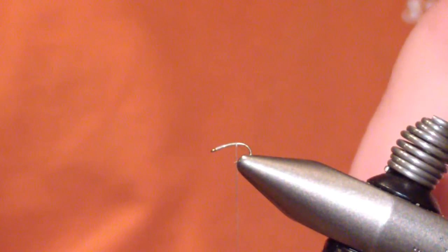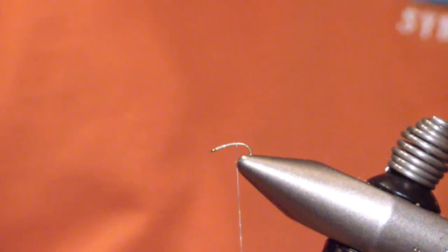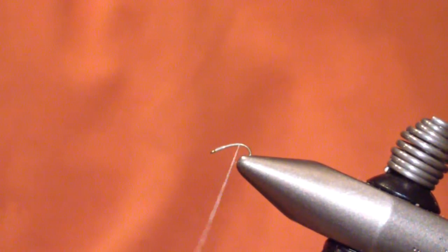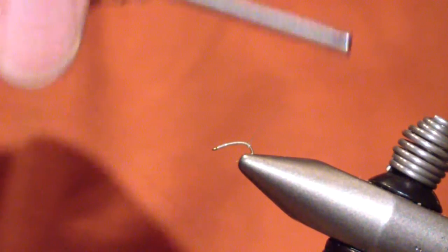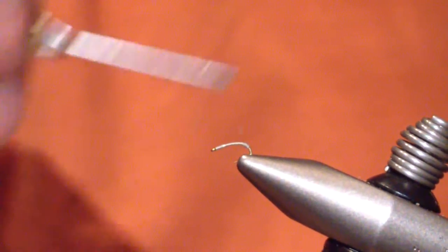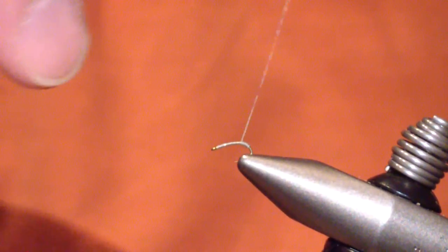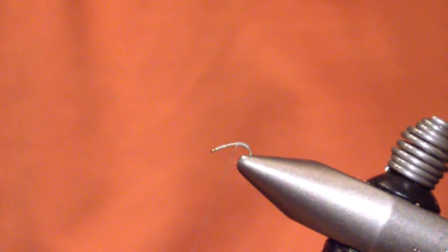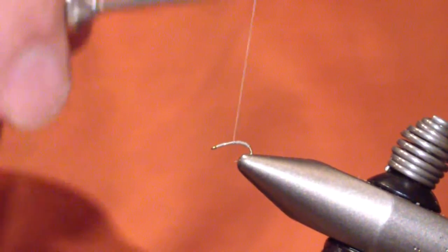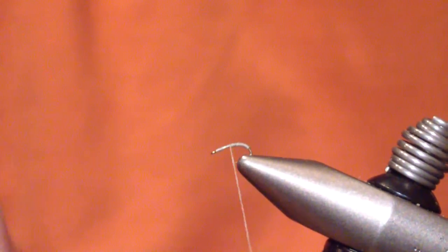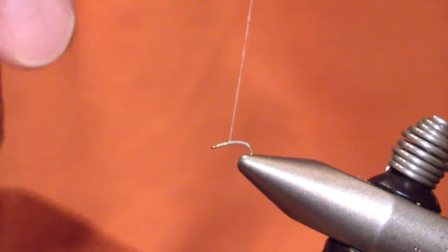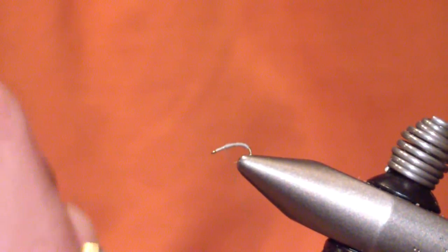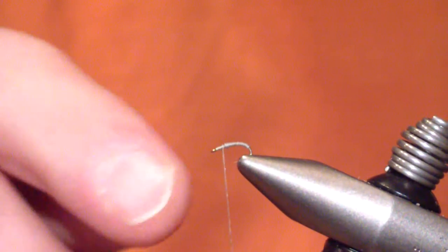I work back building just a single layer base to about midway point of the bend, and then I bring it back forward. What I do is I bring it back forward is I put a slight taper on it. I build a little bit of a body. Just a slight taper, nothing real dramatic. And when I'm about two eye lengths short of the eye, I stop it.